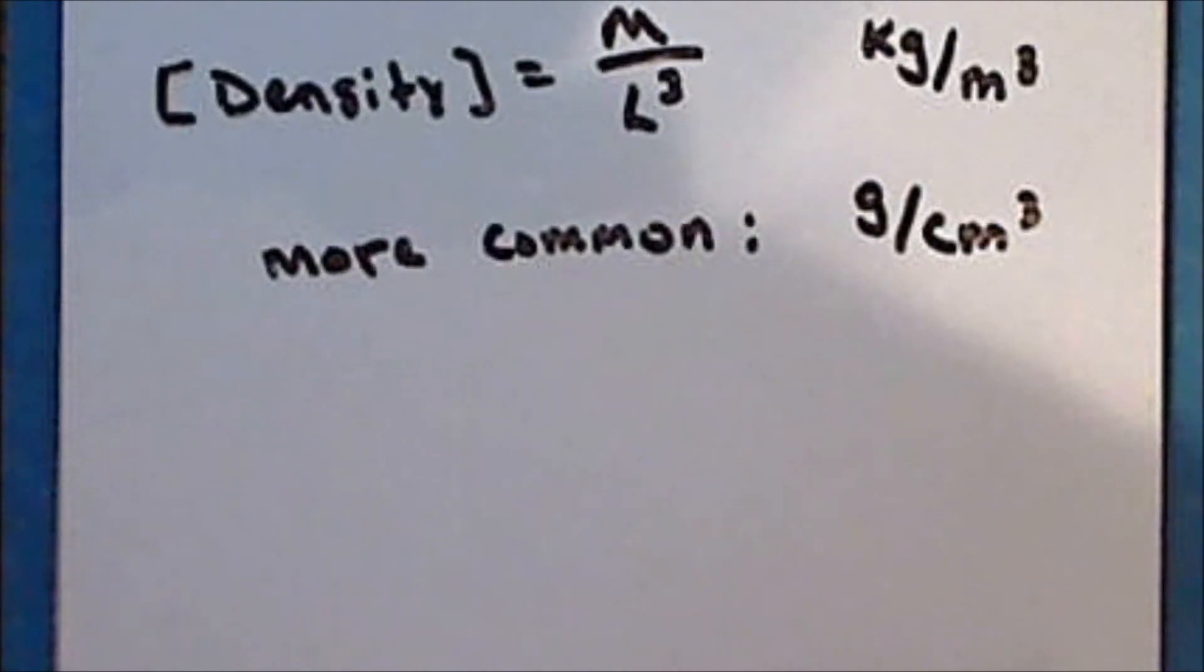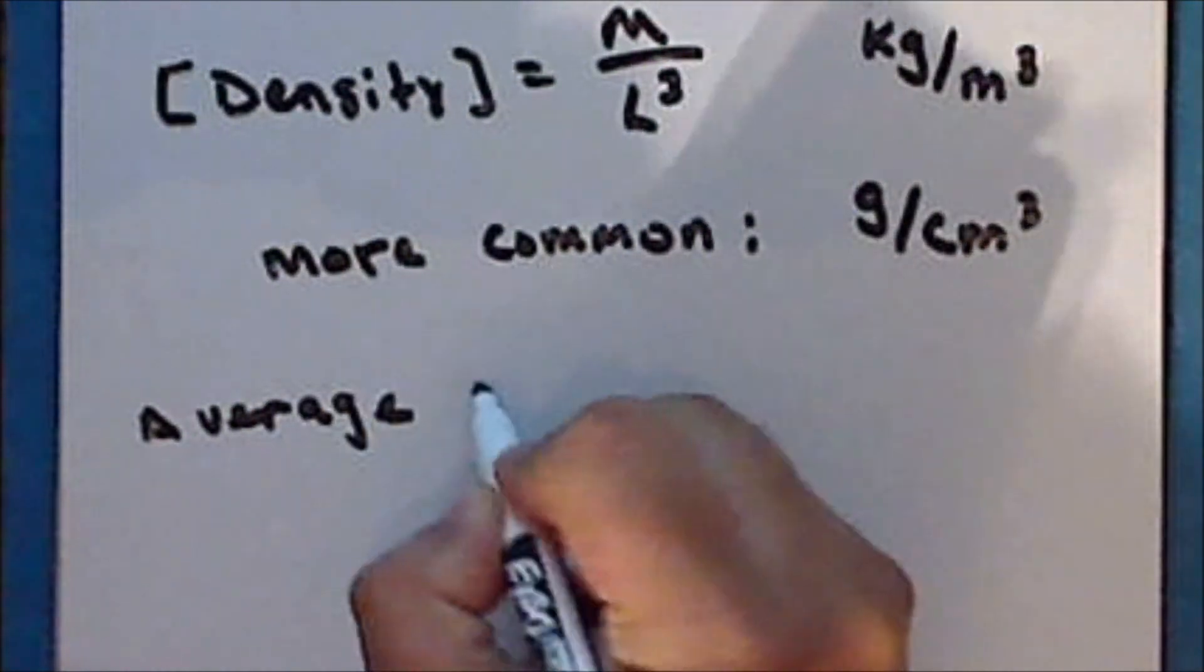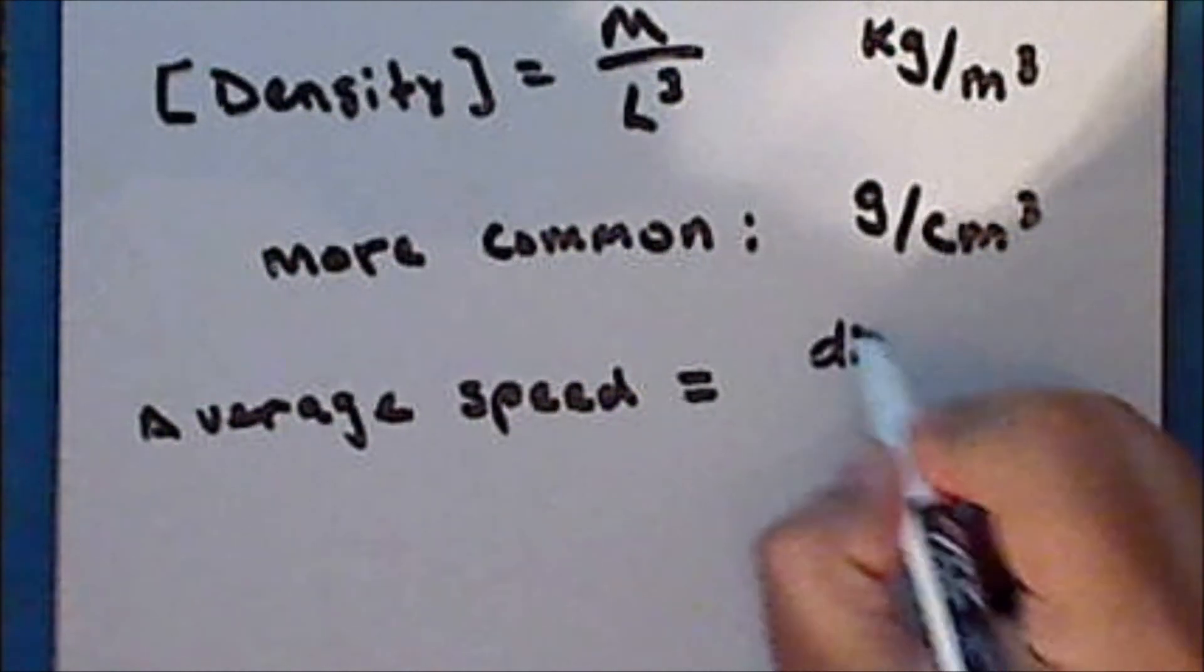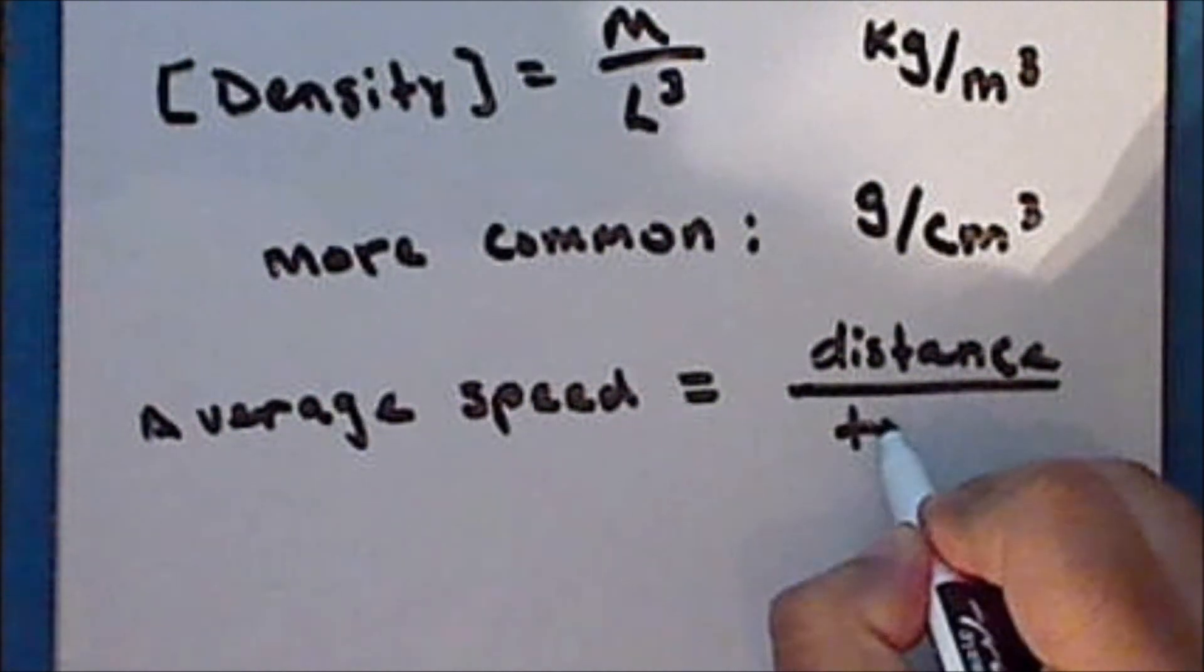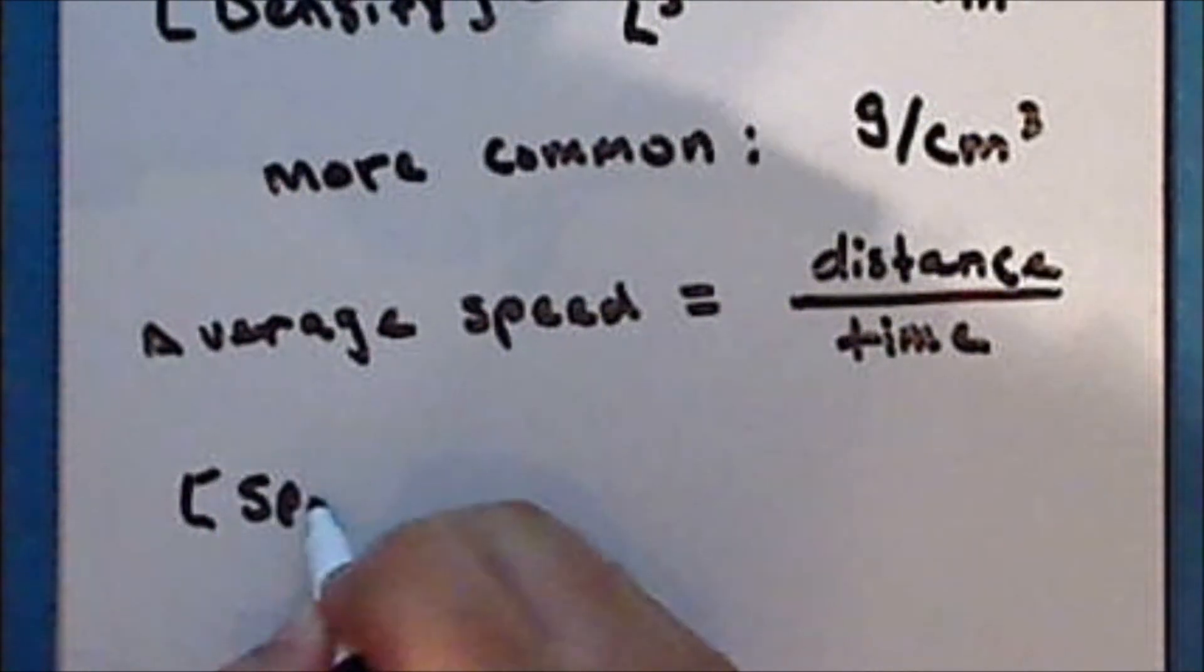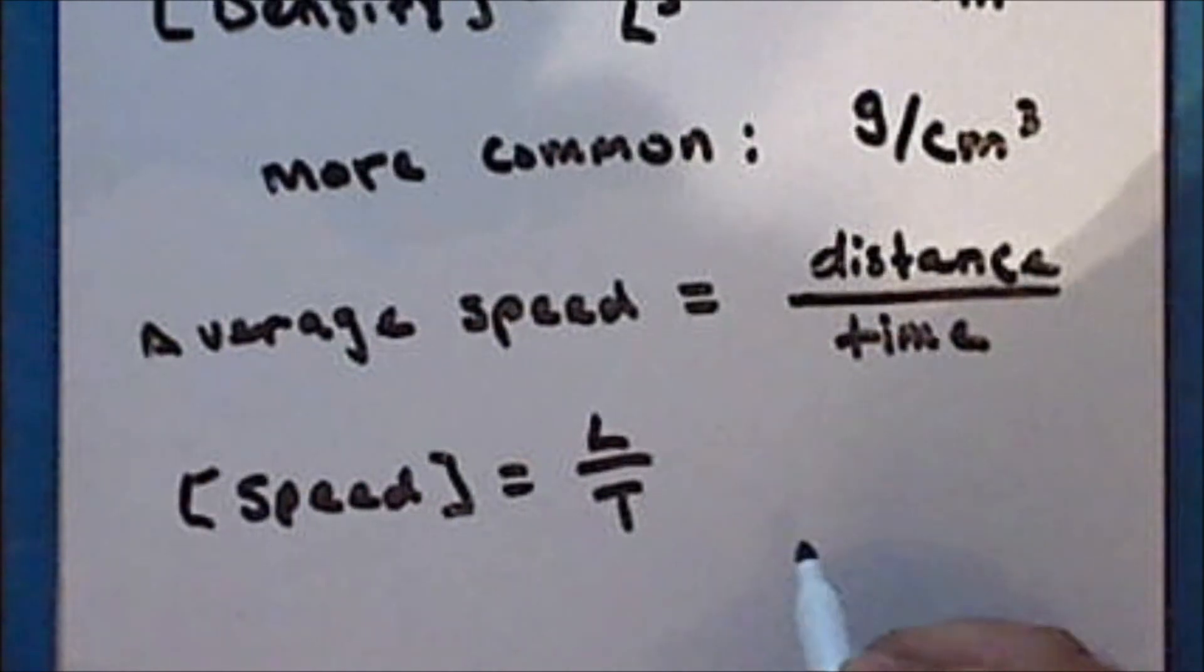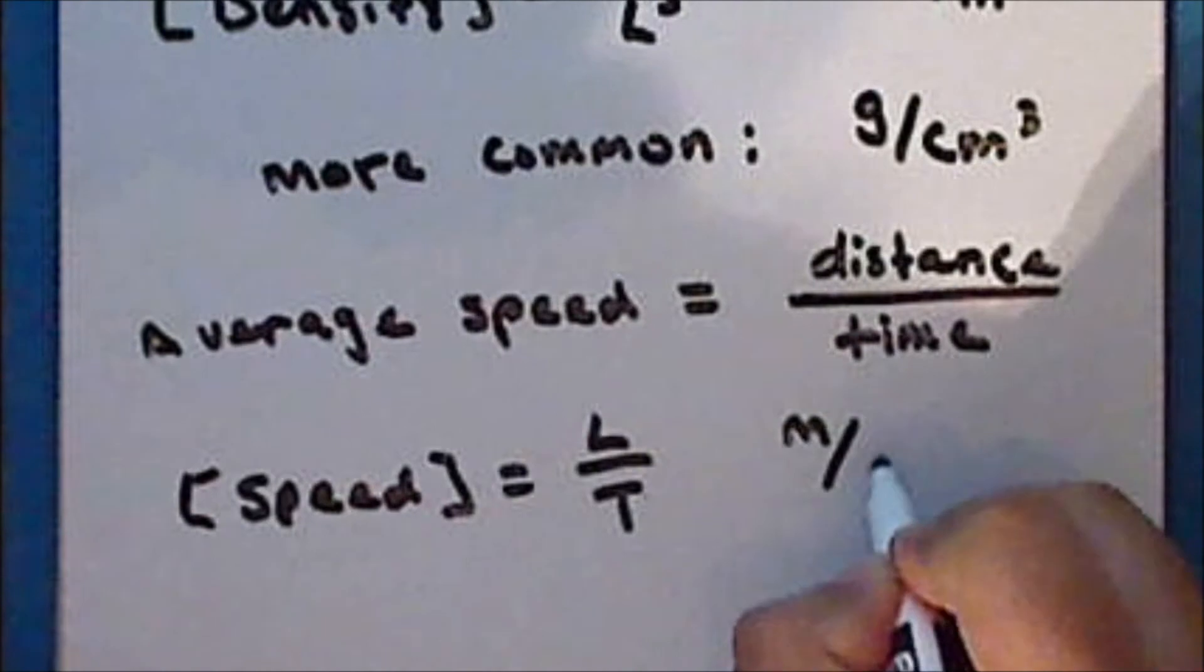Now, one way to describe the motion of an object is its average speed, which is defined to be the distance that the object travels per the time required to traverse that distance. So that the dimension of speed is length per time. And so the standard unit for speed is meters per second.